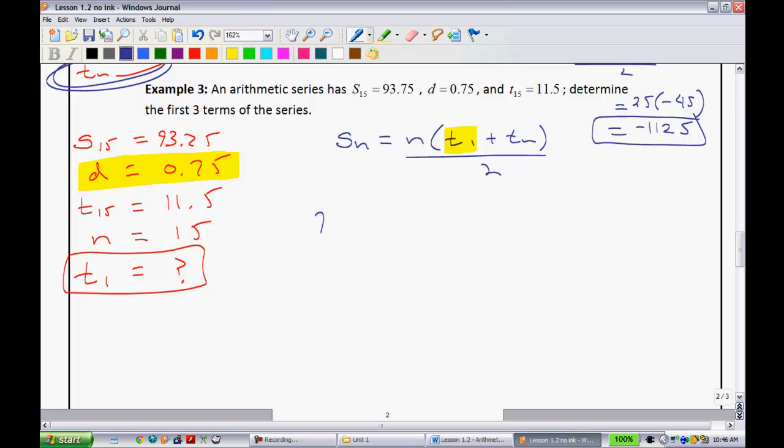So, sn, or s15, was equal to 93.75, which is equal to n, 15, all multiplied by t1, we don't know what it is, plus tn was 11.5, all divided by 2. A little bit of algebra right here. What I'm going to do is, I'm going to kind of do a couple things in one step. To get rid of this 2, we're going to cross multiply it here. To get rid of this 15, we're going to divide it here. So, we have 93.75, all multiplied by 2, over 15, is equal to t1, plus 11.5.